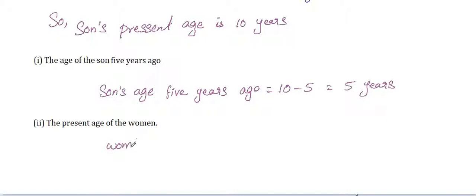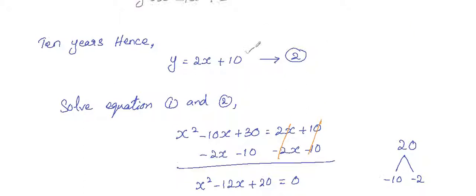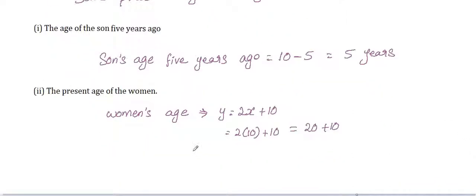Now find the present age of the woman. Using Equation 2, y equals 2x plus 10. Substituting x equals 10, we get y equals 2 times 10 plus 10, which is 20 plus 10. So the woman's present age is 30 years.